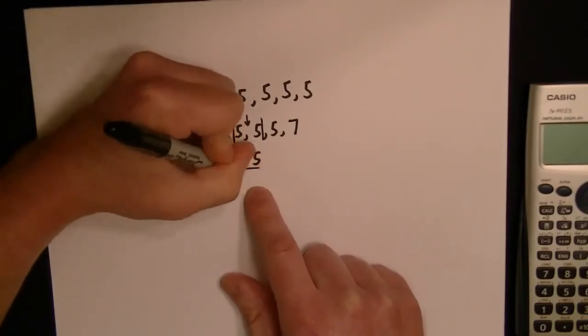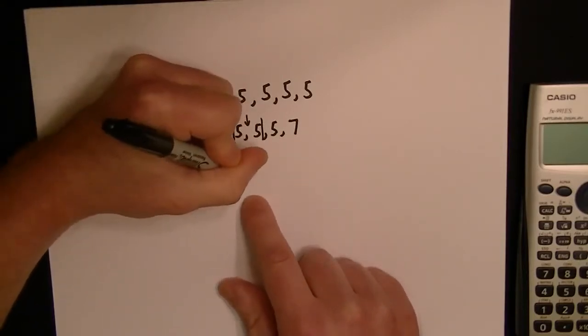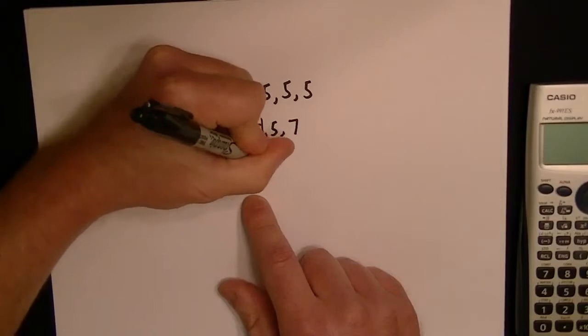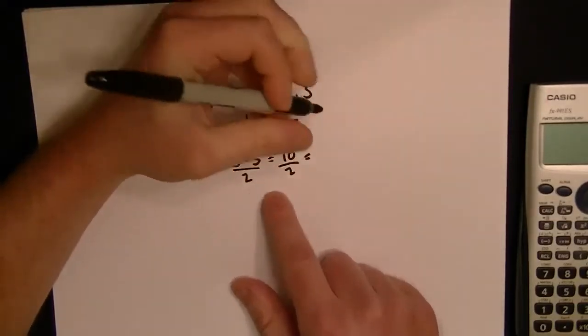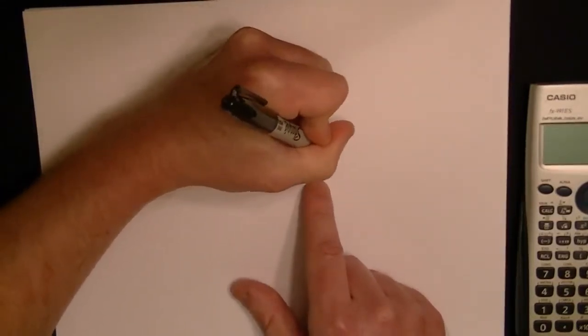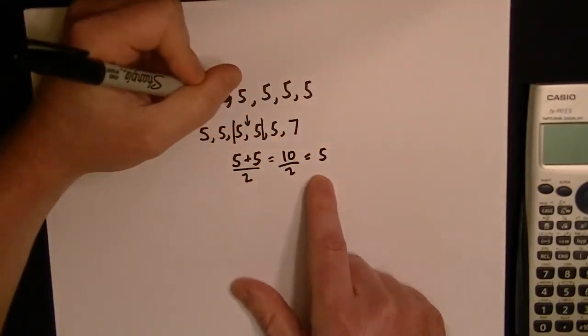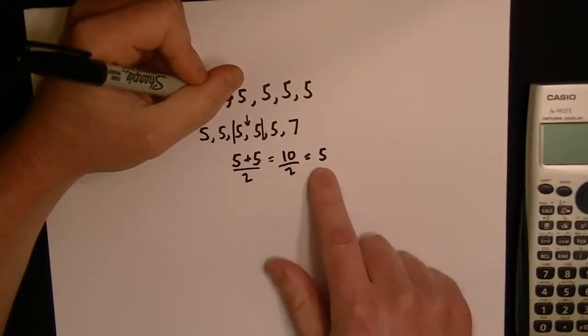So 5 plus 5, and then because you're summing two numbers, you put a 2 on the bottom. So if you get 5 plus 5, it's 10 over 2. So the average of two 5s is 5. So in this case, the median number is 5.